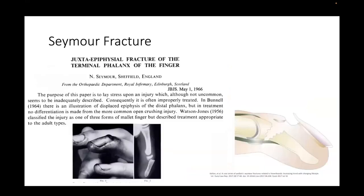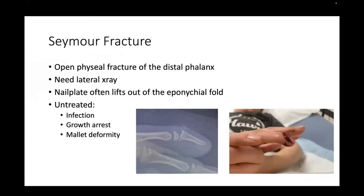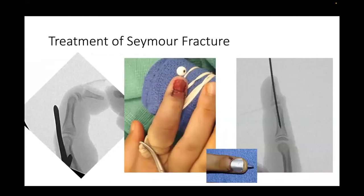Seymour fractures are fractures that occur at the physis where the germinal matrix becomes interposed. They need a lateral x-ray to make the diagnosis. The nail plate often lifts out of the eponychial fold, and untreated, these can lead to infection, growth arrest, and mallet deformity. Treatment involves making two diagonal back cuts to identify the germinal matrix, debride the fracture, repair the germinal matrix, and fixate the bone with a K-wire.